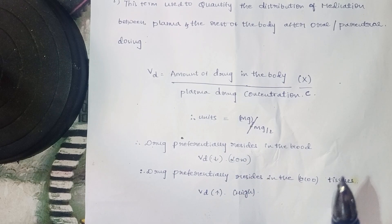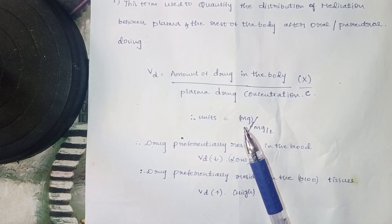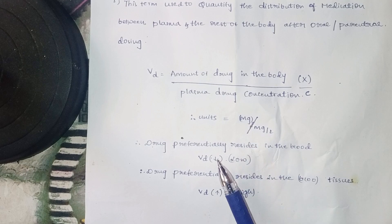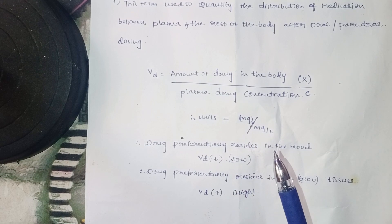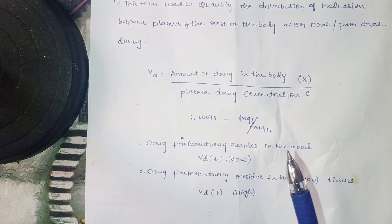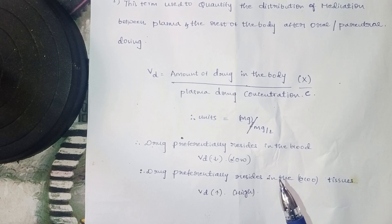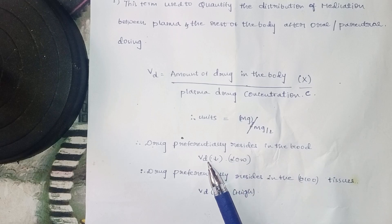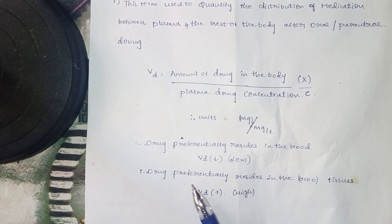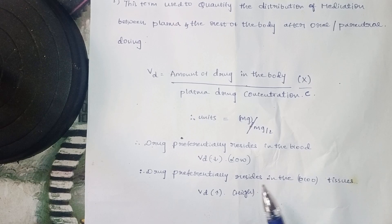When VD is equal to the volume of blood, the drug preferentially resides in the blood — this means VD is low. When VD is high, the drug preferentially resides in the tissue. So VD indicates where in the body the drug is distributed.